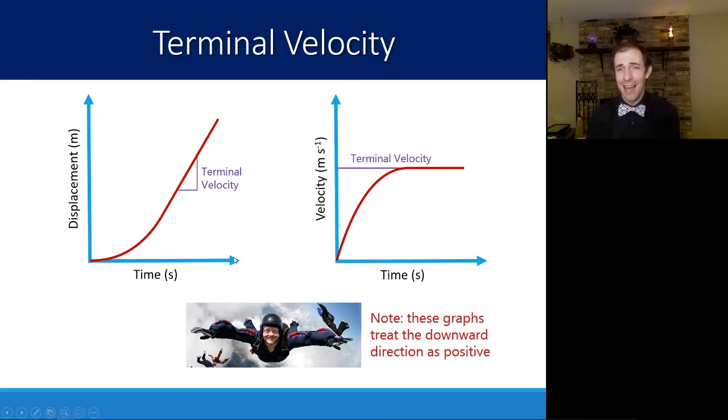Note on these graphs, they're treating downward direction as positive. IB loves these graphs, so it's possible that you might see an example like this on an IB exam. I want you to see it in the way that they would present it, as this is basically your magnitude of your velocity and your displacement, not worrying about the direction.